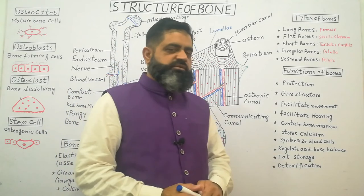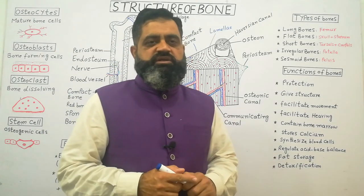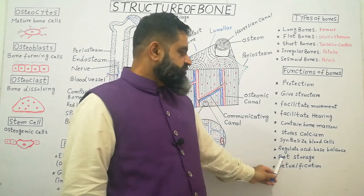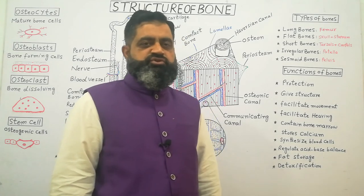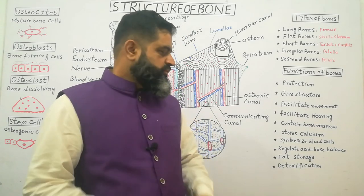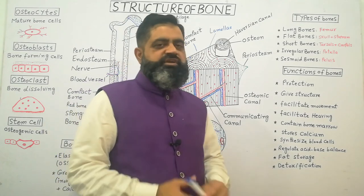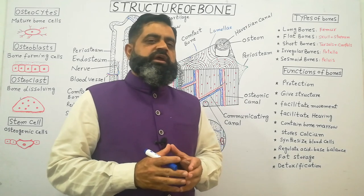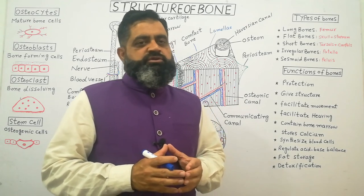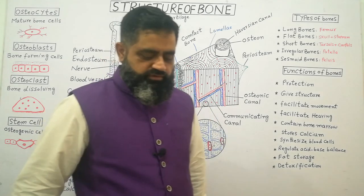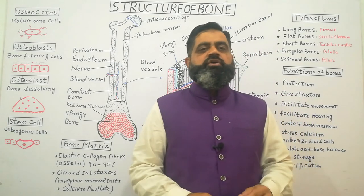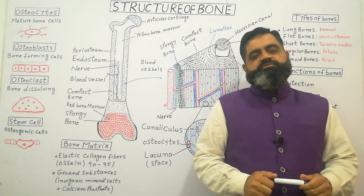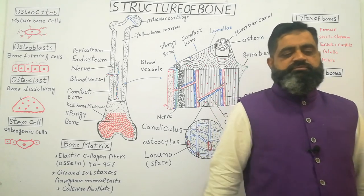Bones also regulate acid-base balance by releasing ions and minerals into the blood to maintain pH. They store fat in adipose tissue found in yellow bone marrow. Bones are also involved in detoxification, during which certain toxic chemicals are removed and neutralized. That concludes today's discussion on the structure and function of bones. Please like, subscribe, and share with your friends, and we'll see you in the next lecture.